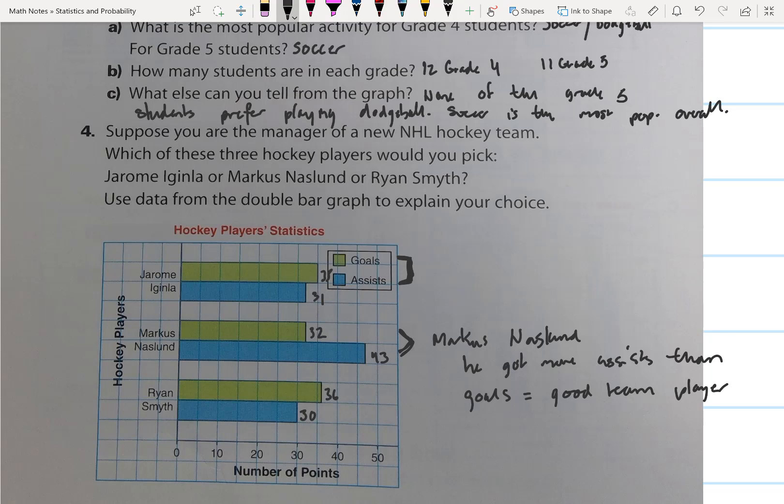So he didn't get as many goals as the other players, but he did get a lot of assists. So I would want somebody who could make plays and make the players around him better. Because he still had a respectable goal count. He had 32 goals, not as many as Jerome Iginla, but overall points, if you add up his points, he had a significant amount more than the other two players.